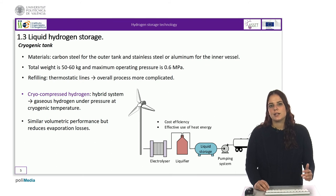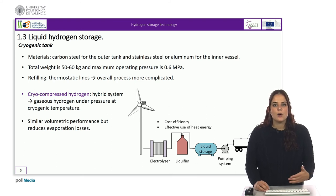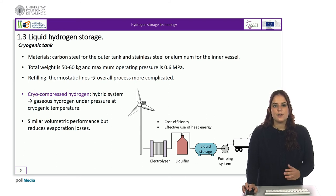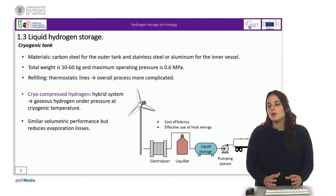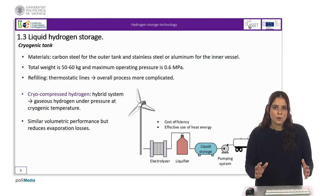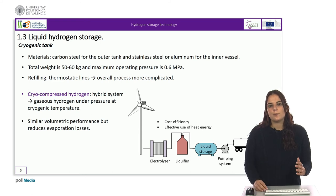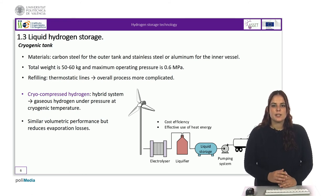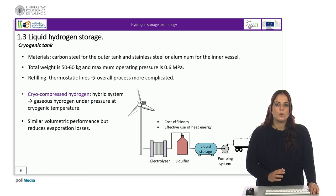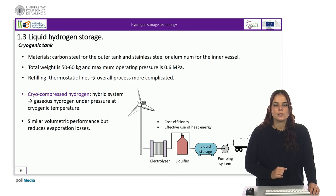The process of refilling cryogenic tanks is not a problem per se. However, the lines need to be thermostatic. Therefore, the need for a refrigeration system and compressor makes the overall process more complicated than storing compressed hydrogen. Nevertheless, cryogenic storage has the advantage that the working pressure is relatively low and the volumes required to store the same amount of hydrogen are much lower.